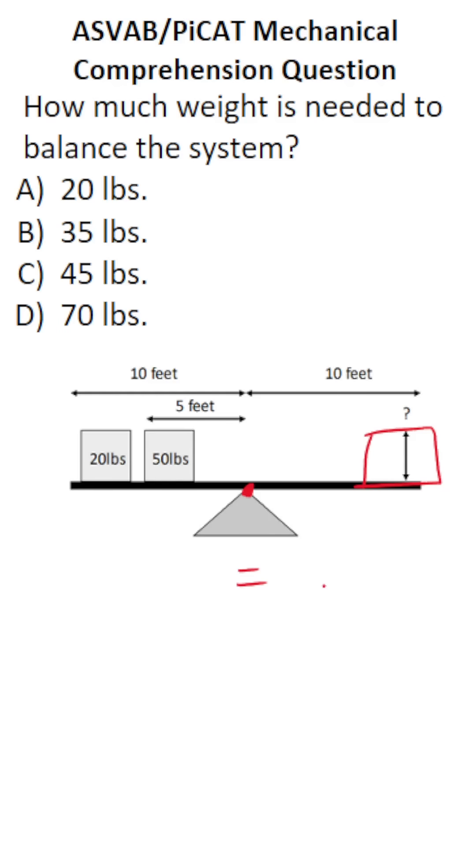On this left-hand side of the equal sign, here's what I'm going to multiply. This 20-pound weight is 10 feet away from this fulcrum, so I'm going to do 20 times 10 plus this 50-pound weight is 5 feet away from the fulcrum, the center of the fulcrum. So that's going to be 50 times 5.